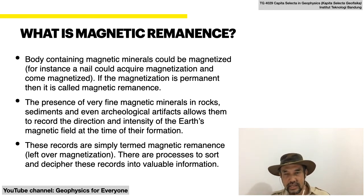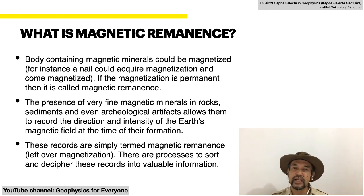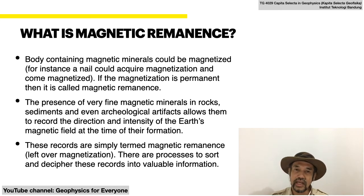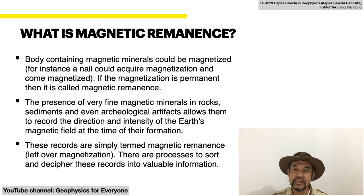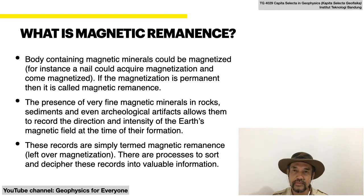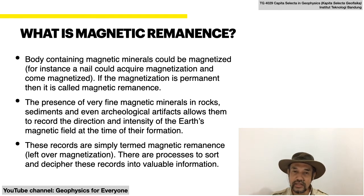Now in nature, because of the presence of very fine magnetic minerals, substances such as rocks, sediments, and even archaeological artifacts might record the directions and the intensity of the Earth's magnetic field at the time of their formation. These records are simply the magnetic remanence, or leftover magnetization.